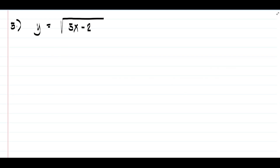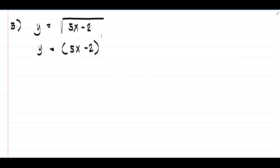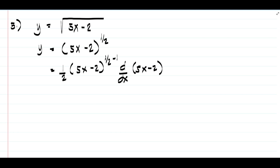For example number five, we have y equals square root of 5x minus 2. Since the given is in radical form, let us rewrite it in exponential form: y equals quantity 5x minus 2 raised to 1 half. To find the derivative, we have 1 half times 5x minus 2 raised to 1 half minus 1, that is negative 1 half, times the derivative of 5x minus 2, which is 5.